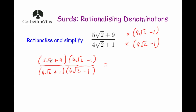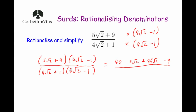Let's expand the brackets. 5 root 2 multiplied by 4 root 2: 5 times 4 is 20, root 2 times root 2 is 2, so 20 times 2 is 40. Next, 5 root 2 times negative 1 is subtract 5 root 2. Then 9 multiplied by 4 root 2 is plus 36 root 2. And 9 times minus 1 is subtract 9. On the denominator: 4 root 2 times 4 root 2 — 4 times 4 is 16, root 2 times root 2 is 2, so 16 times 2 is 32. Then 4 root 2 times minus 1 is minus 4 root 2. And 1 times 4 root 2 is plus 4 root 2. Finally, 1 multiplied by minus 1 is minus 1.